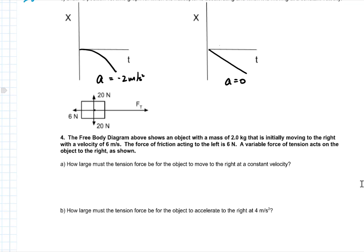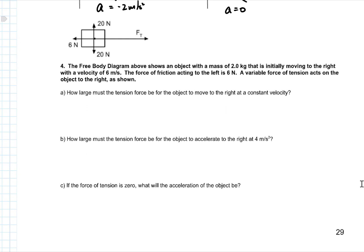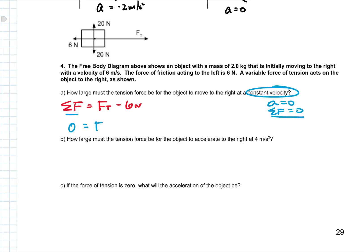Number four: we have a free body diagram showing an object with mass 2 kilograms moving to the right at 6 meters per second. Friction is negative 6 newtons, and an unknown tension acts to the right. How large must the tension force be to move at constant velocity? Net force is tension minus 6 newtons. Since it's constant velocity, net force is zero, so zero equals tension minus 6. The tension force comes out to be 6 newtons.